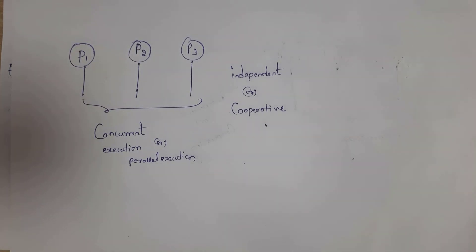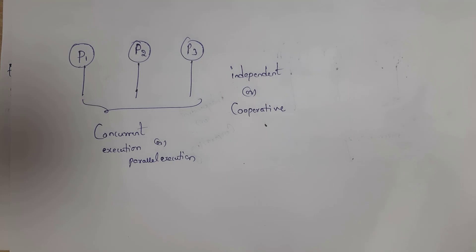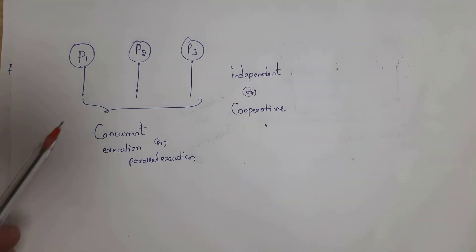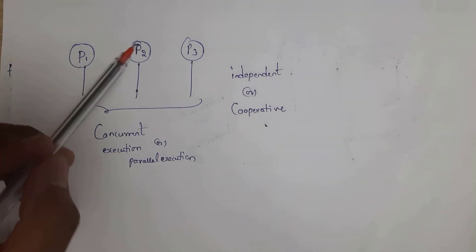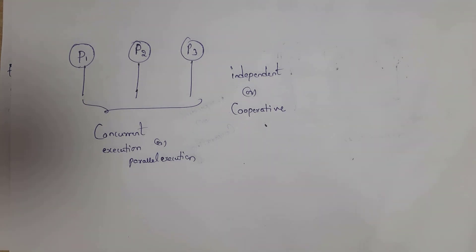What is serial execution? Only after executing the first process will the second process be executed, and similarly after executing the second process, the third process will be executed. This is known as serial execution — only after executing one process will the other process be executed. Whereas in parallel execution, all 3 processes will be executed at the same time. This is known as parallel execution, and we also call this concurrent execution.